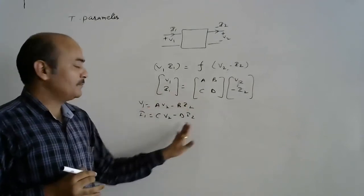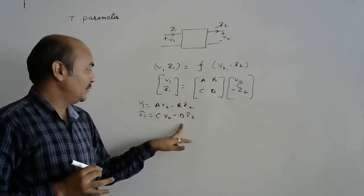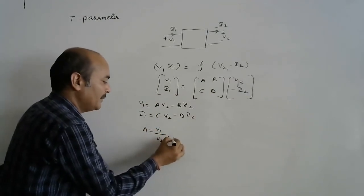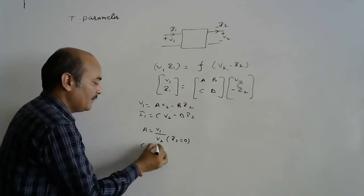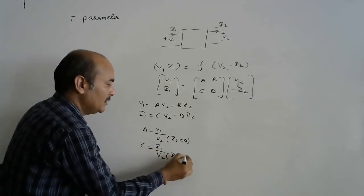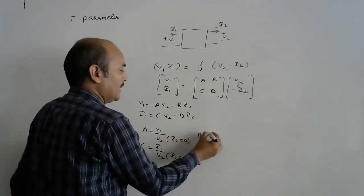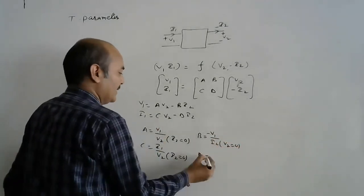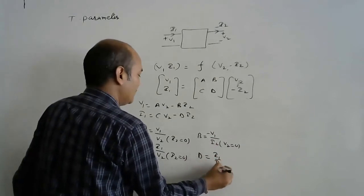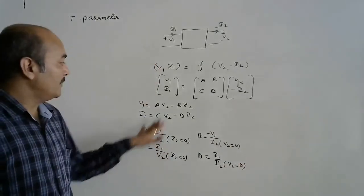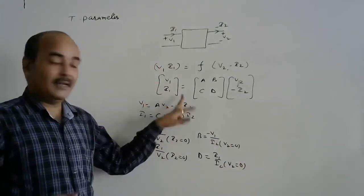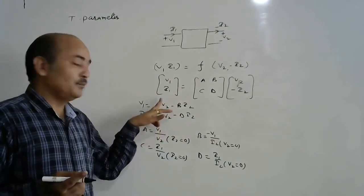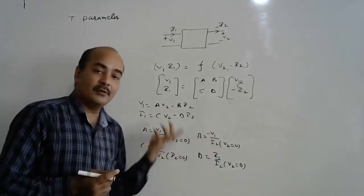To find the parameters, first set I2 = 0 (output open circuit): A = V1/V2 with I2 = 0, and C is defined similarly. Second, set V2 = 0 (output short circuit): B = V1/(−I2) with V2 = 0, and D = I1/I2 with V2 = 0. So by making the output open circuit or short circuit, all four ABCD parameters can be calculated.